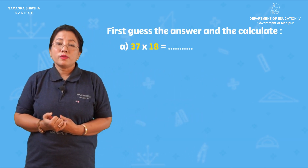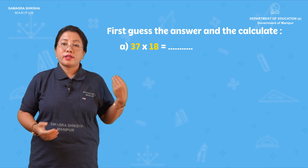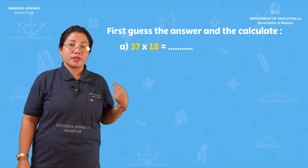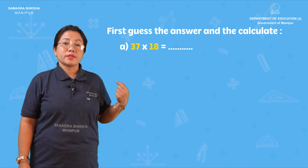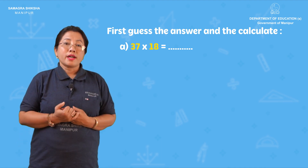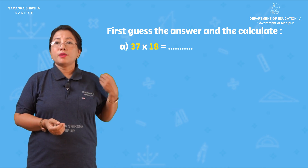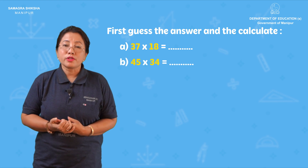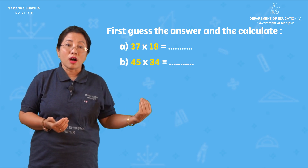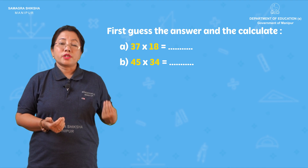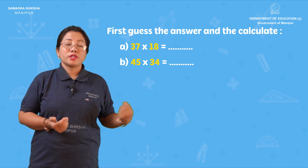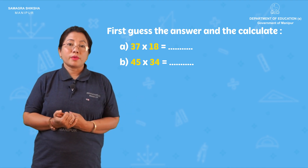See, 37 into 18: this number is 10 plus 8, so you can use the box method. Then number 2: 45 into 34. This number is 45 into 34. You can use the standard method.